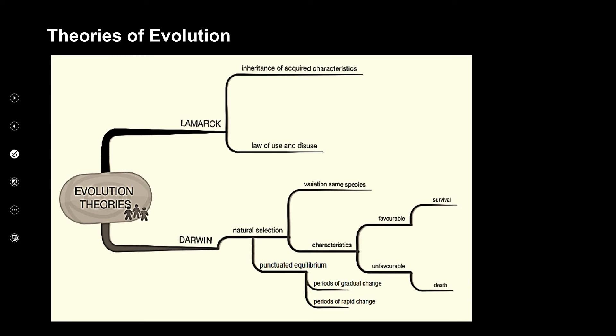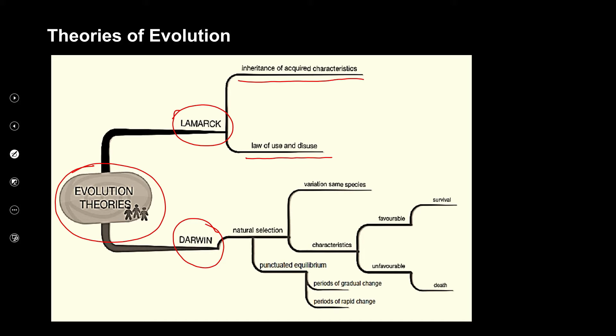This is a mind map — a very nice study tool you can use when studying to set out information. Our main concept is the theories of evolution, and the two main theorists are Darwin and Lamarck. For now we're focusing on Lamarck's two laws: the law of use and disuse, and inheritance of acquired characteristics. We'll look at Darwin's natural selection and punctuated equilibrium later.